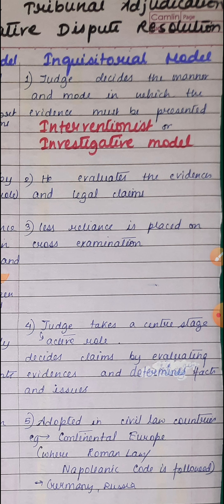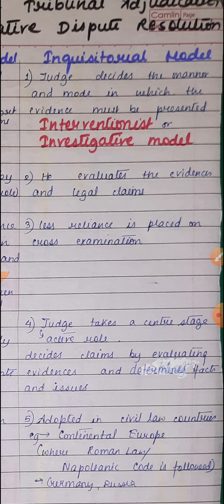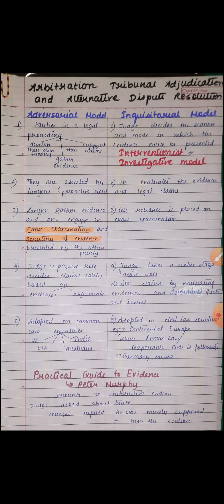This model is followed in civil law countries, where the judiciary cannot make law — only the legislature, and in some rare cases the executive, can make laws. In continental Europe, and in countries where Roman law and the Napoleonic Code is followed — like Germany and Russia — the inquisitorial model is followed. Peter Murphy, in his book 'Practical Guide to Evidence,' sarcastically notes that in the adversarial system, lawyers often twist the facts in such a manner that the truth itself is lost.